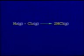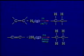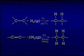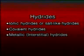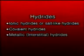Hydrogen burns in air or oxygen to give water. Under certain conditions, it reacts explosively with halogens. In the presence of finely divided nickel, platinum or palladium, Hydrogen can reduce the carbon-carbon double bonds and triple bonds in organic compounds to give alkanes. There are three classes of hydrides.